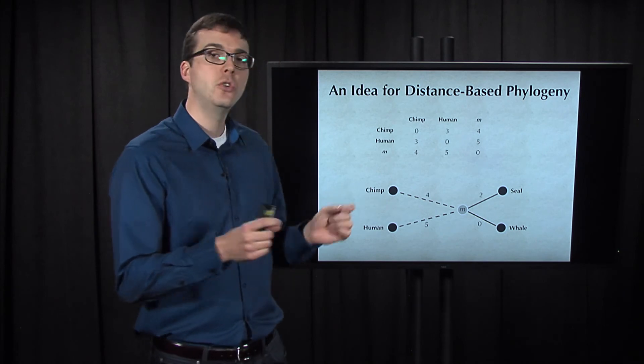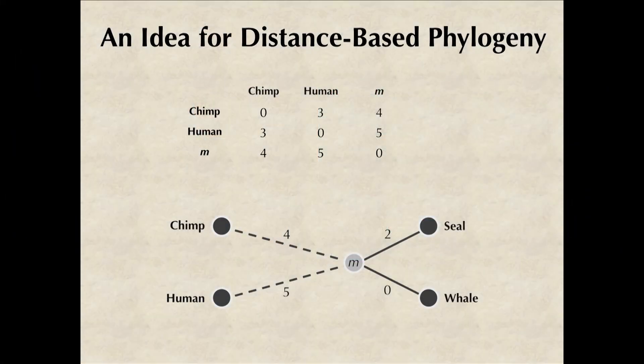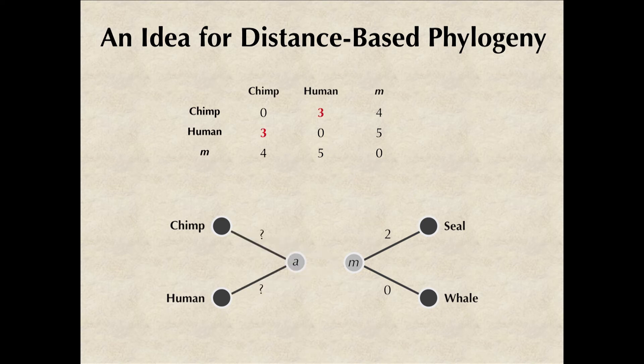Getting rid of seal and whale entirely yields a smaller 3 by 3 matrix. So we have added two neighbors to the tree and reduced the size of the distance matrix by one row and column by simply recomputing the distance from the parent of these neighbors, which we said was m, to the other nodes in the tree.